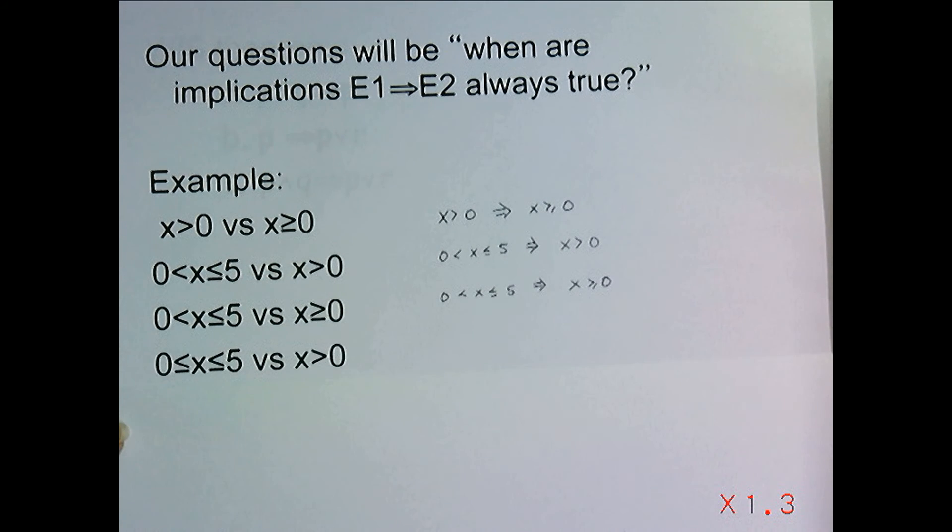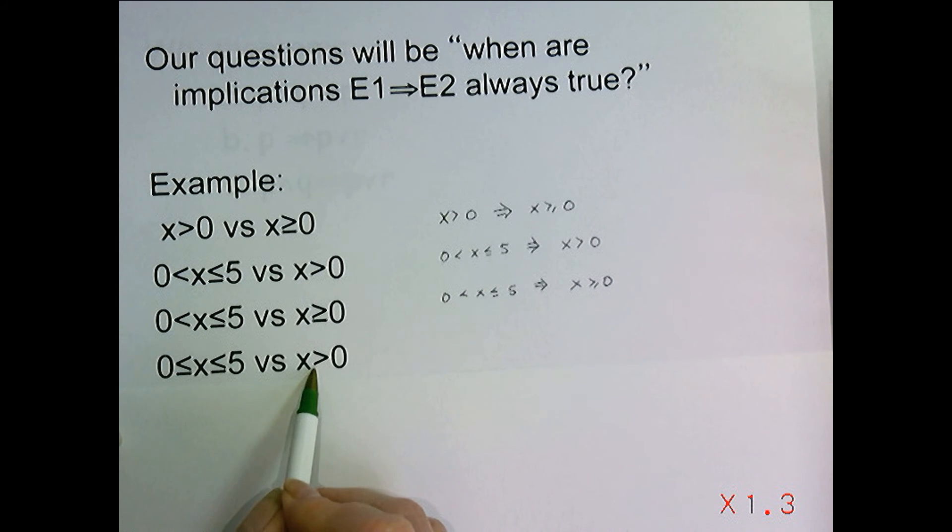But now let's look at this one: x between 0 and 5, including 0 and 5, versus x being greater than 0. Well, if I pick 0, it makes this true but not this, so this is not stronger than x being greater than 0. On the other hand, if I pick 7, it makes this true but not this. So these two expressions, neither one of them is stronger or weaker than the other.